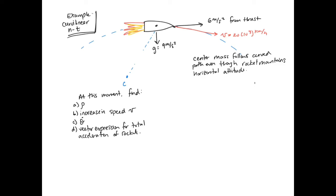This is an example where we're solving curvilinear motion in normal and tangential components. Here we have a rocket travelling along a curved path, remaining horizontal through the motion. At this moment in time, the horizontal rocket has acceleration from two places: 6 meters per second squared from thrust propelling it forward, and gravity pulling it down at 9 meters per second squared.